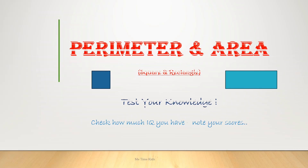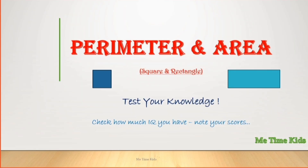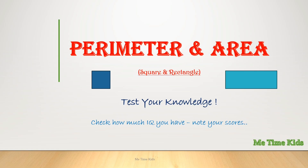Hello everyone. Our topic for today's quiz is perimeter and area of square and rectangle. Test your knowledge on the topic and check your progress with scorecard at the end. So, let's start.